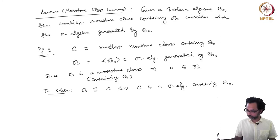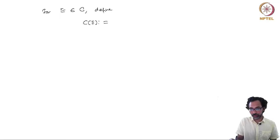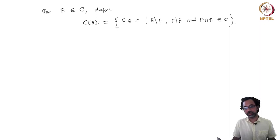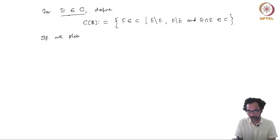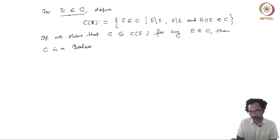Then we will have equality of C and B. What we will do is the following: for E an element in the monotone class C, define C_E to be the collection of sets F in C such that E minus F, F minus E, and E ∩ F are all in C. If we show that C is a subset of C_E for any E in C, then C is a Boolean algebra.